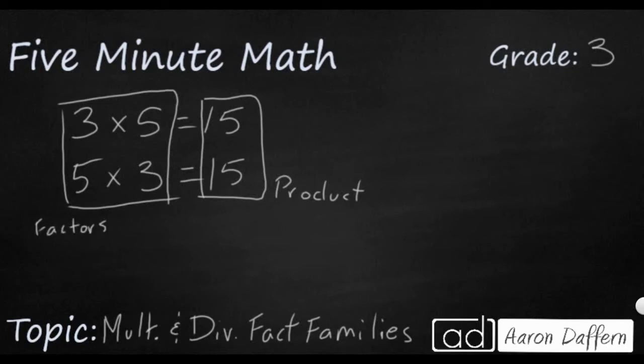So you multiply factors together to make a product. Now I can take those exact same three digits, the 3 and the 5 and the 15, and I can write two related division problems. But here's the thing, the 15, which in the multiplication problem was our product, always goes first. I'm going to divide 15 by 3 in the top one, and then divide 15 by 5 in the bottom one. So 15 divided by 3 is going to make 5, and 15 divided by 5 is 3.